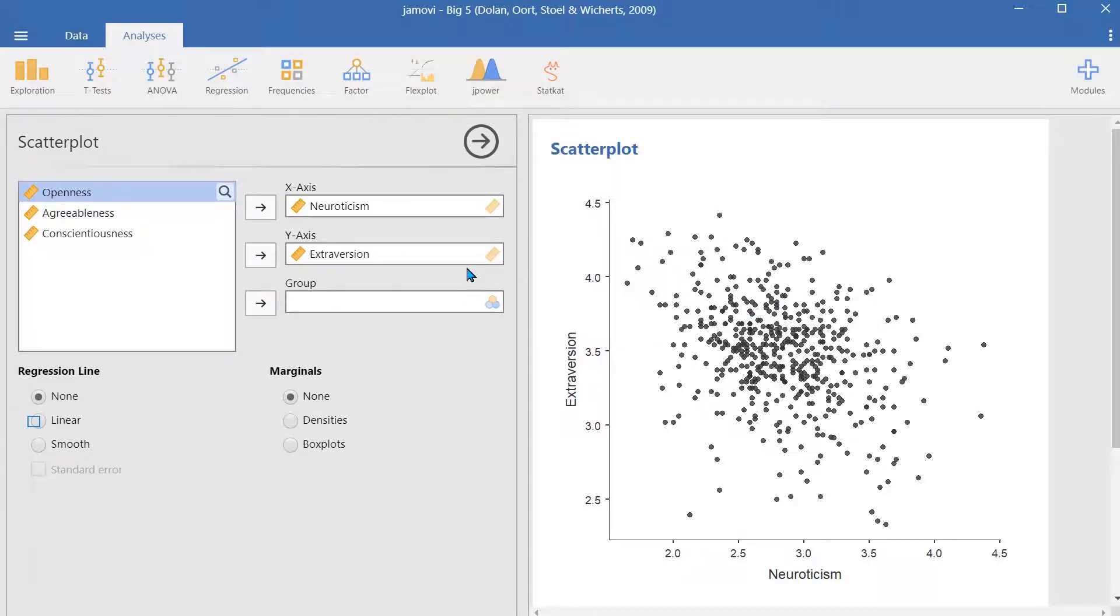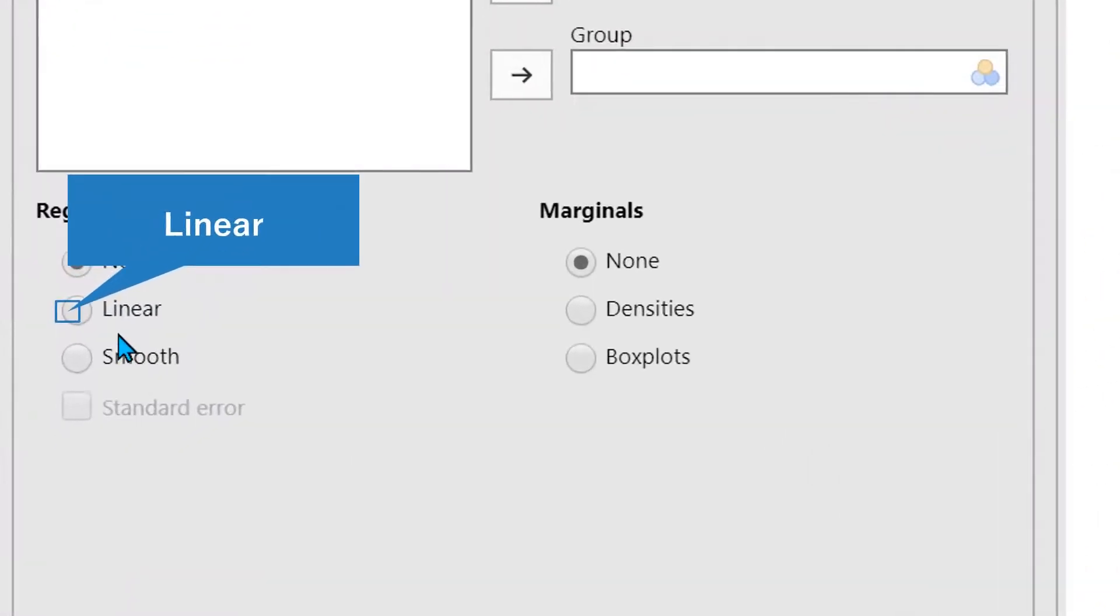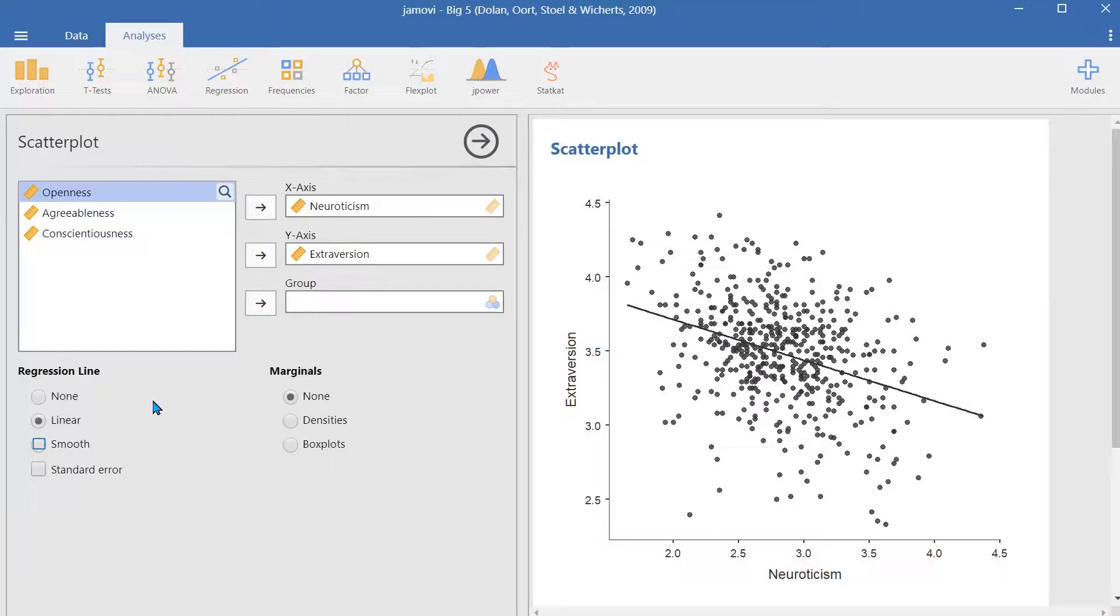We can also add a regression line. Here we have the option for a linear regression line, or we can have a smoother regression line that matches the data in a better manner.